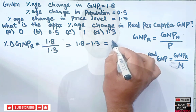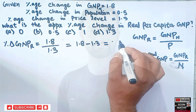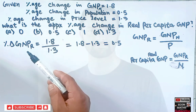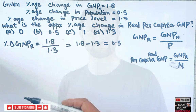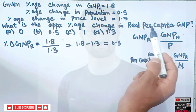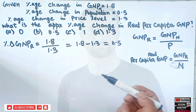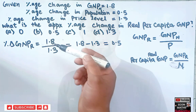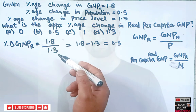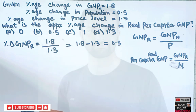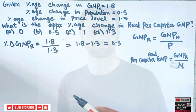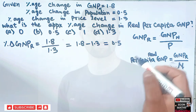So 1.8 minus 1.3 equals 0.5. Since the question asks for the percentage change in real per capita GNP, when we have percentages in both numerator and denominator, we don't divide — we subtract the denominator from the numerator. Therefore, the percentage change in real GNP is 0.5%.